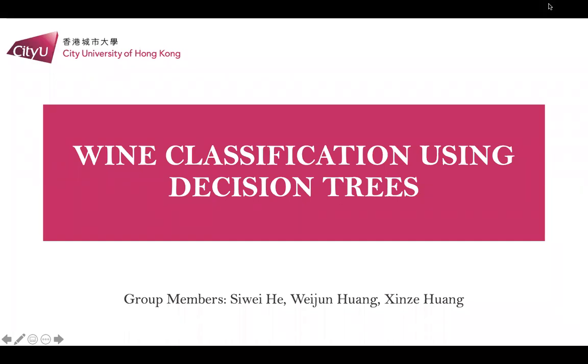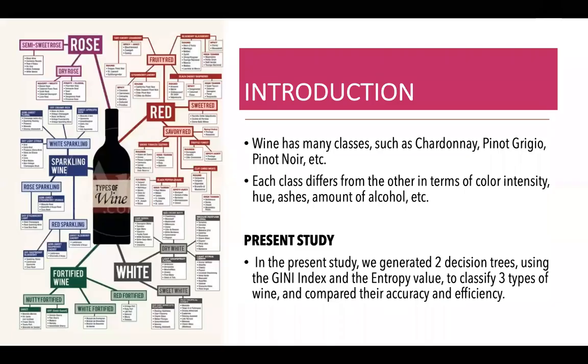For our project we did wine classification using decision trees. As we know, wine has many classes such as white wine, red wine, sparkling, rosé, and each class differs from each other in terms of color intensity, hue, ashes, the amount of alcohol, etc.